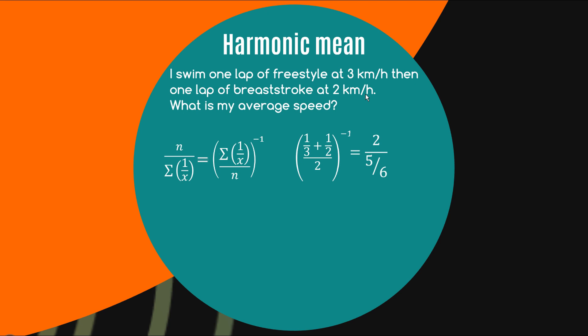So here it is using that formula instead of three plus two divided by two we now have one on three plus one on two divided by two and then we invert that and so using a little bit of algebra here which hopefully you're up to it's going to be two divided by five on six which turns out to be 2.4 so my average speed here is 2.4 kilometers per hour and you'll notice that it is slightly closer to two than it is to three that's kind of what we expected right because we're swimming at two kilometers an hour for slightly longer than we're swimming at three kilometers an hour because of the fixed distance.